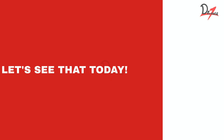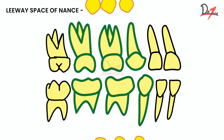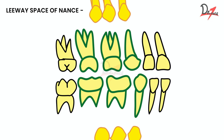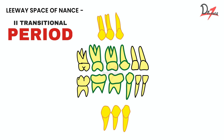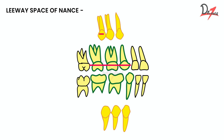What is the leeway space of Nance? There is a time in our life when deciduous teeth are going to be replaced by permanent teeth. The deciduous canine and deciduous molars will be replaced by the permanent canine and premolars — this is called the second transitional phase. The deciduous teeth occupy a larger space compared to the permanent teeth inside the jawbone.